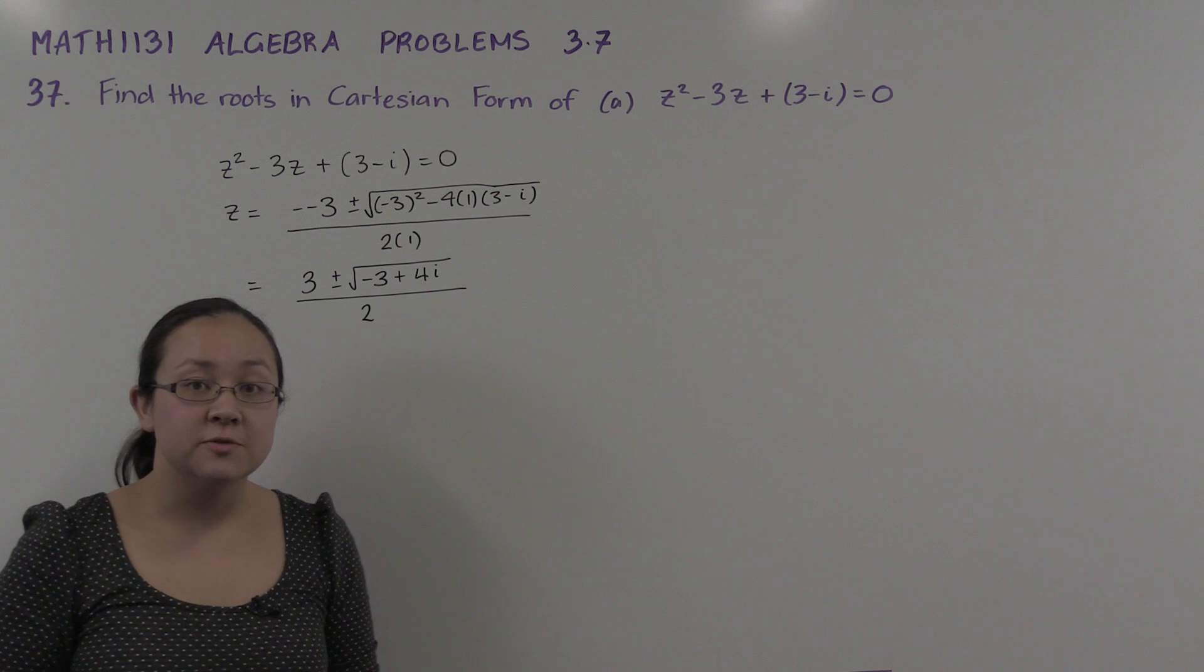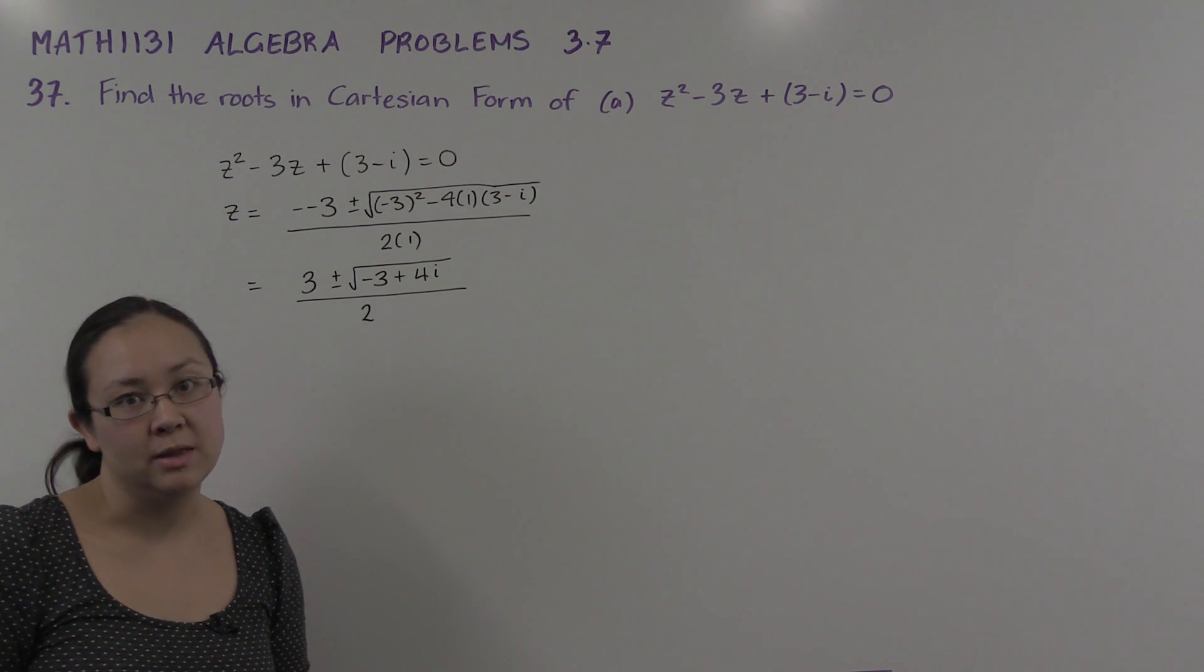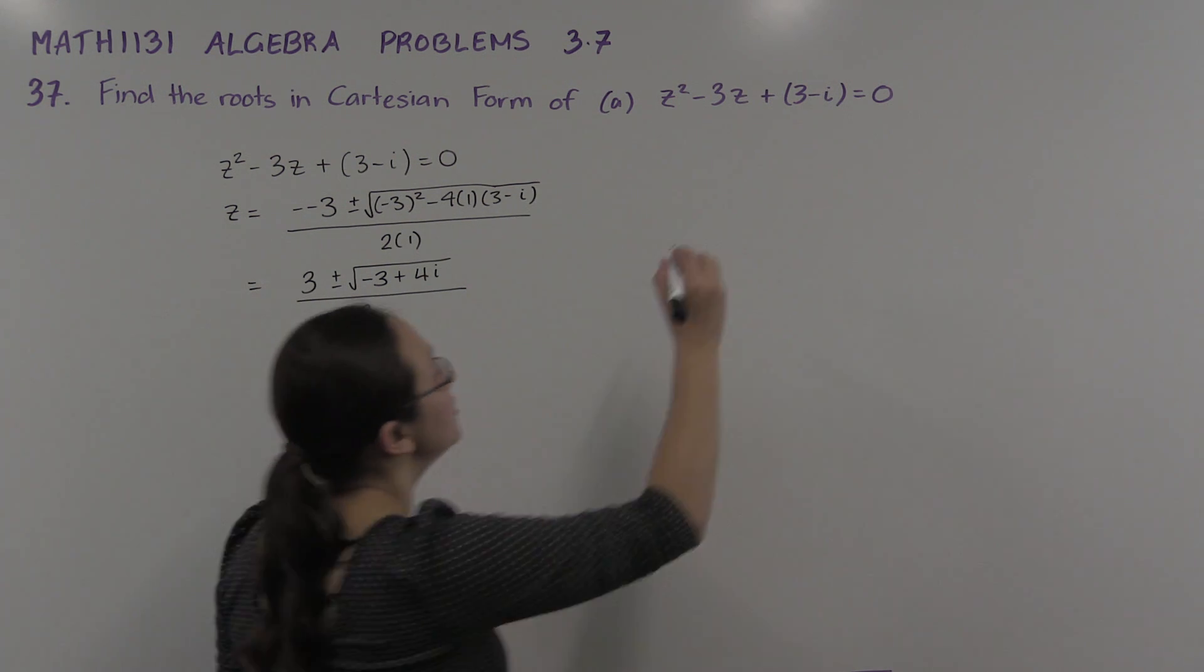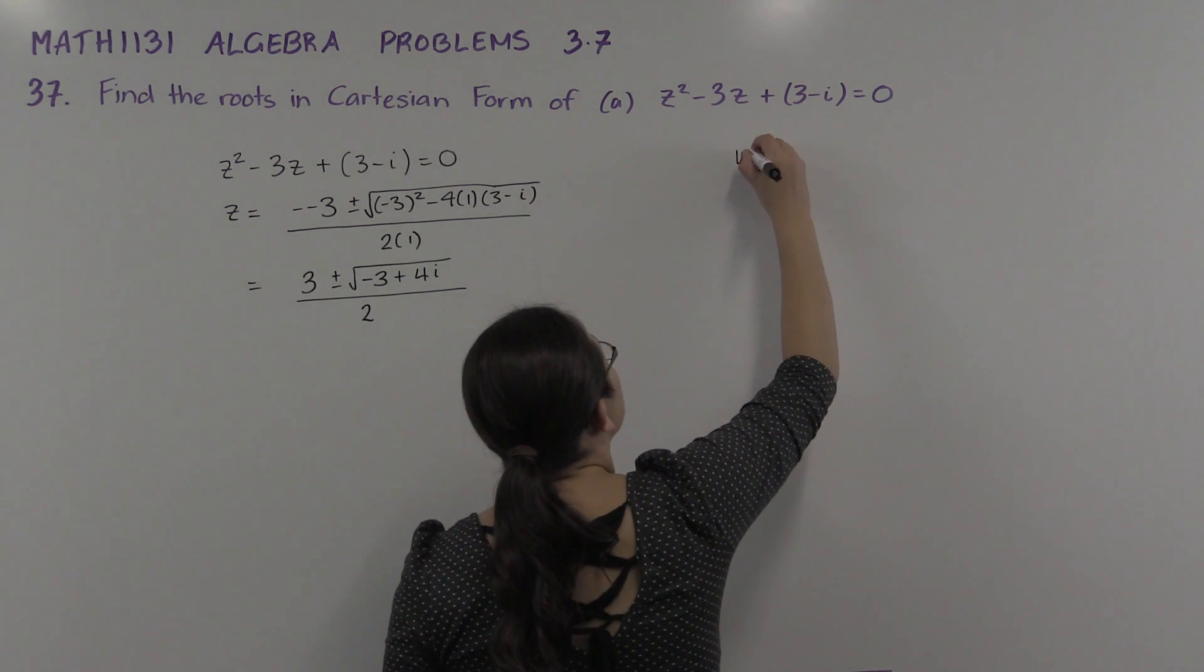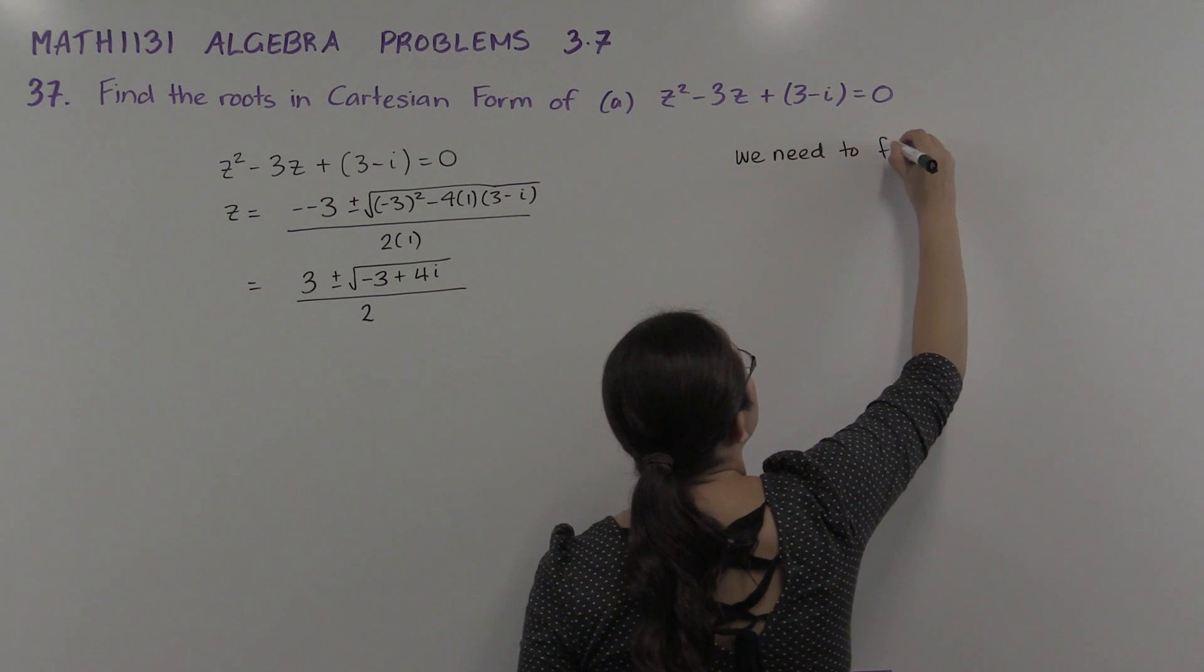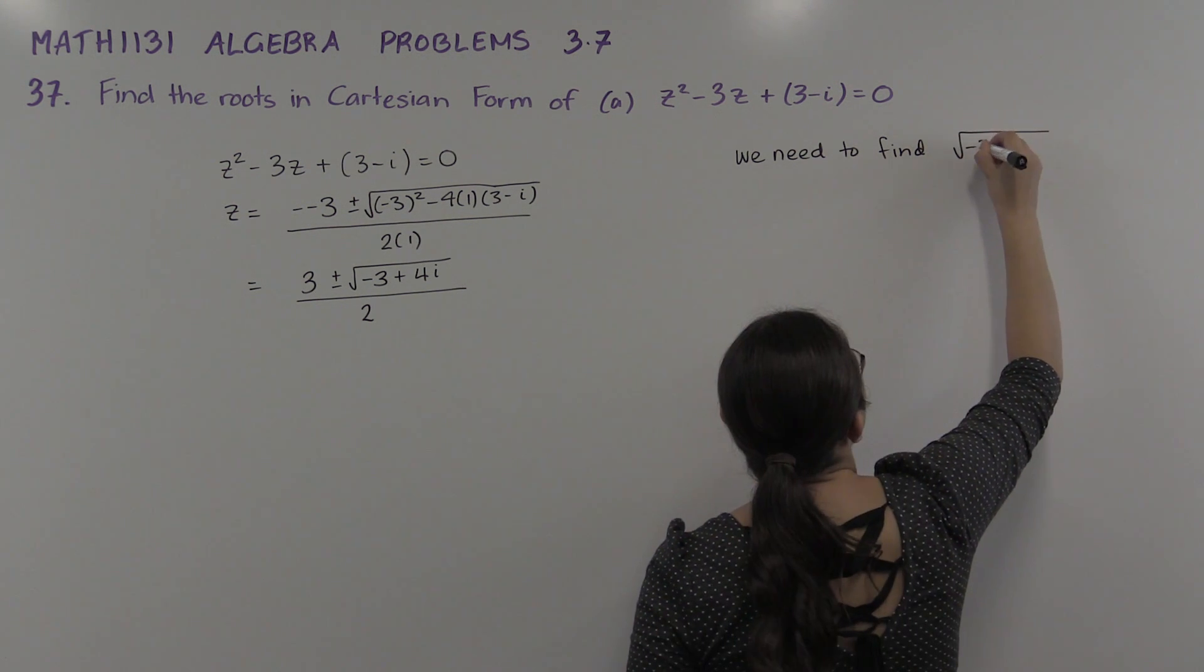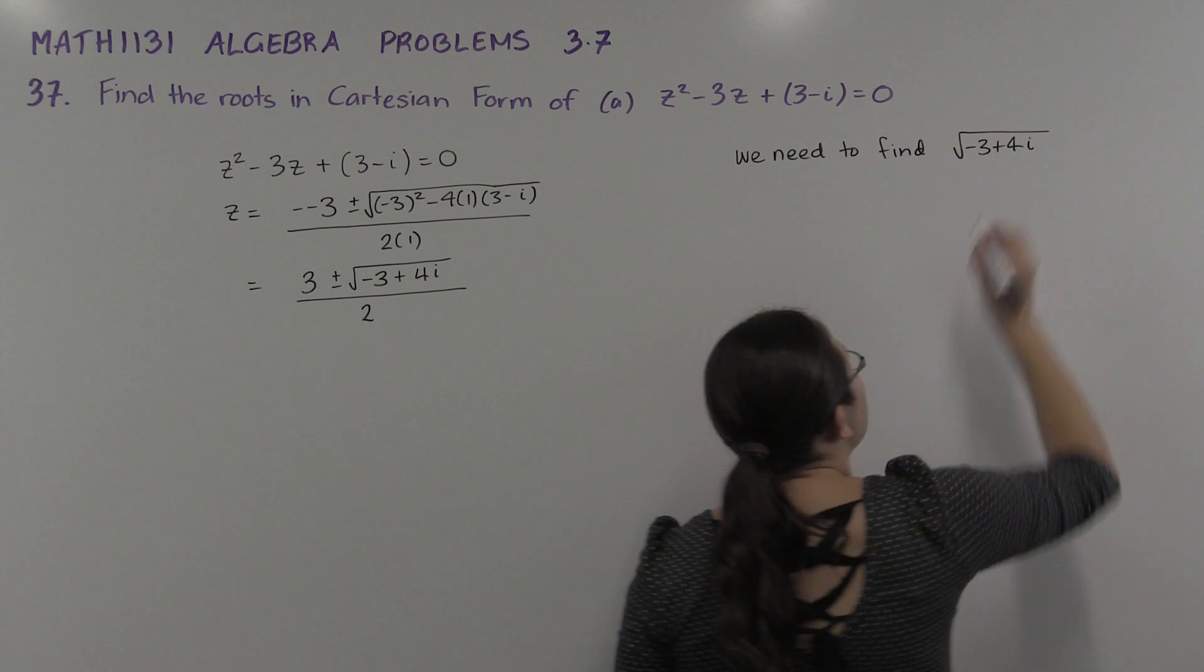So here's our solution for z. But inside that we have the square root of a complex number there. We need to know what that is. So let's find what this √(-3 + 4i) is as a complex number in Cartesian form.